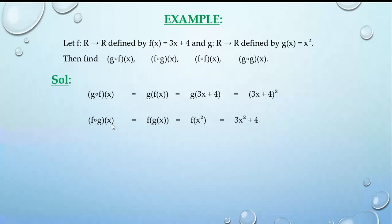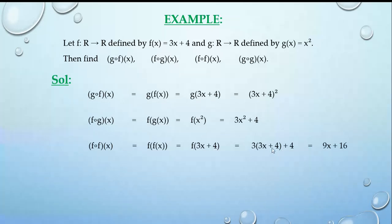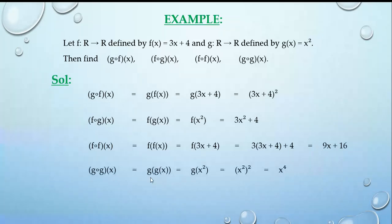For f(f(x)): f(x) = 3x + 4, so we substitute into f again — f(3x + 4) = 3(3x + 4) + 4 = 9x + 12 + 4 = 9x + 16. For g(g(x)): g(x) = x², so g(x²) means substituting x² in place of x — (x²)² = x⁴.